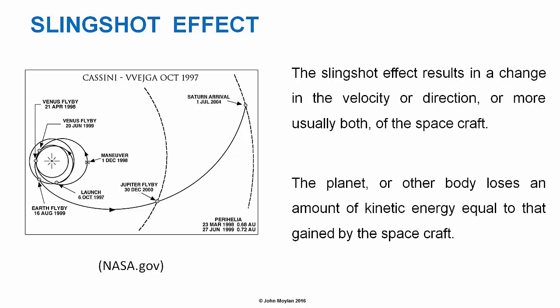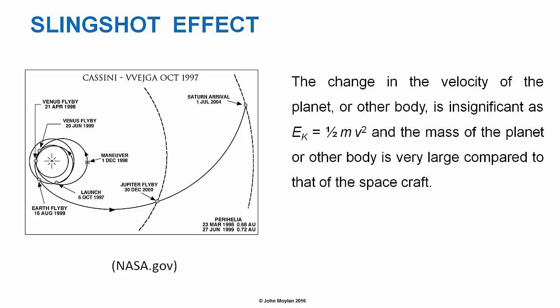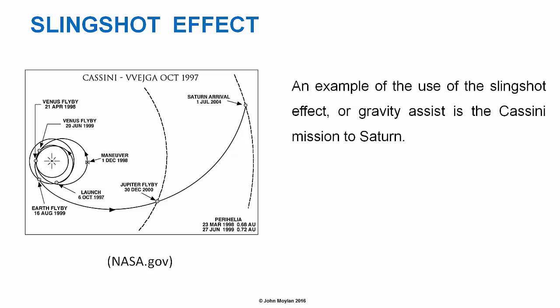The planet or other body loses an amount of kinetic energy equal to that gained by the spacecraft. The change in the velocity of the planet or other body is insignificant, as kinetic energy equals one half mv squared, and the mass of the planet or other body is very large compared to that of the spacecraft.